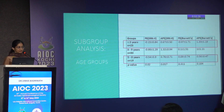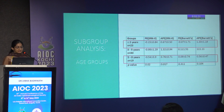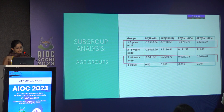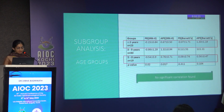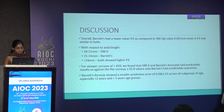In the subgroup analysis according to age, eyes were divided into three groups: less than two years, three to five years, and five to eight years. Barrett's performed better than SRK2 overall across all age groups, and the least amount of predictive error was seen in the less than two years age group. No significant correlation was seen with age.